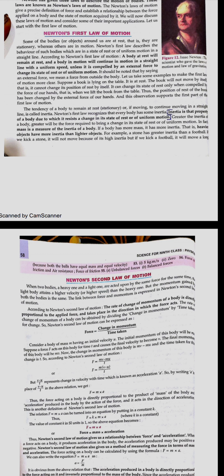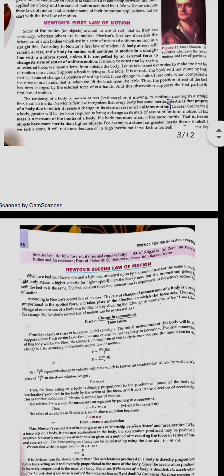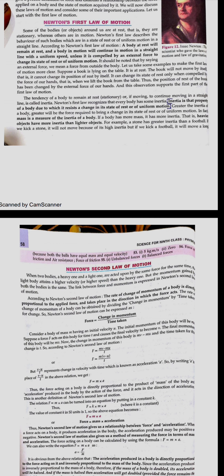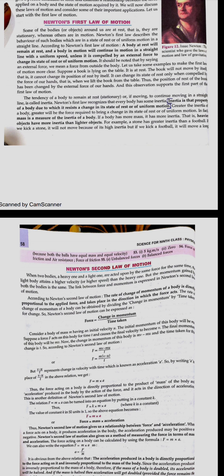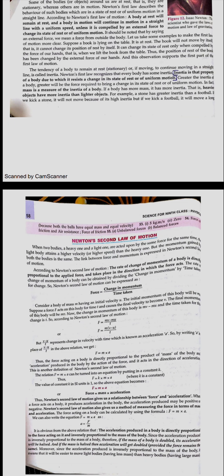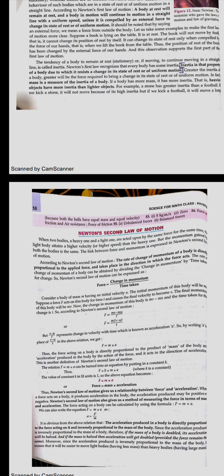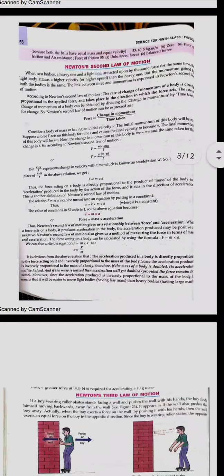The first law tells us that everybody has a tendency to remain at rest if it is at rest, and the tendency of a body to remain in motion if it is moving. This tendency is named as inertia — the property of a body due to which it does not change its state of rest or motion. A body at rest will remain at rest and a body in motion will continue in motion unless an external force is exerted on it. Through the first law, Newton defined both force and inertia.